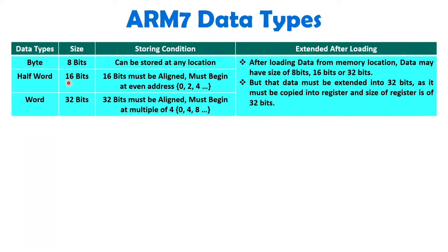If you load 16 bits of data, then another 16 bits need to be extended to make it 32 bits, and then you will have to store that inside the register. If data size is 32 bits, then you do not need extension as the register size is already 32 bits. After loading data from a memory location, data may have size of 8 bits, 16 bits, or 32 bits, but that data must be extended into 32 bits as it must be copied into the register.